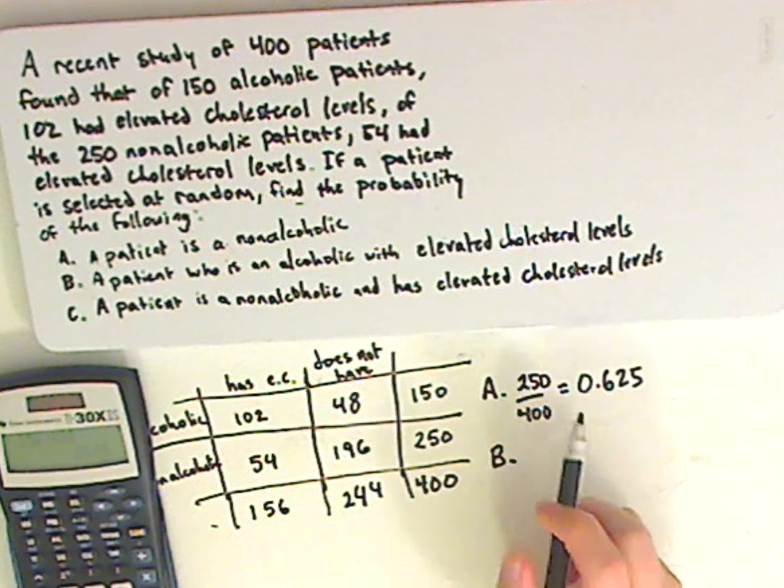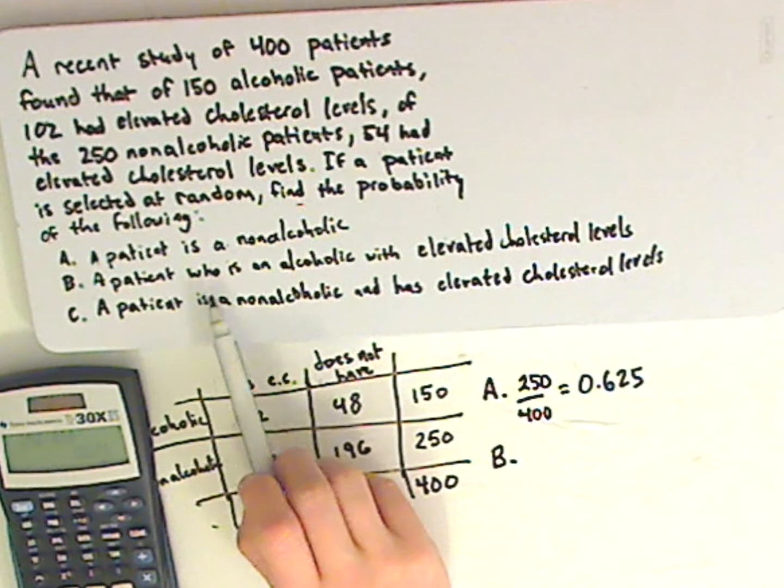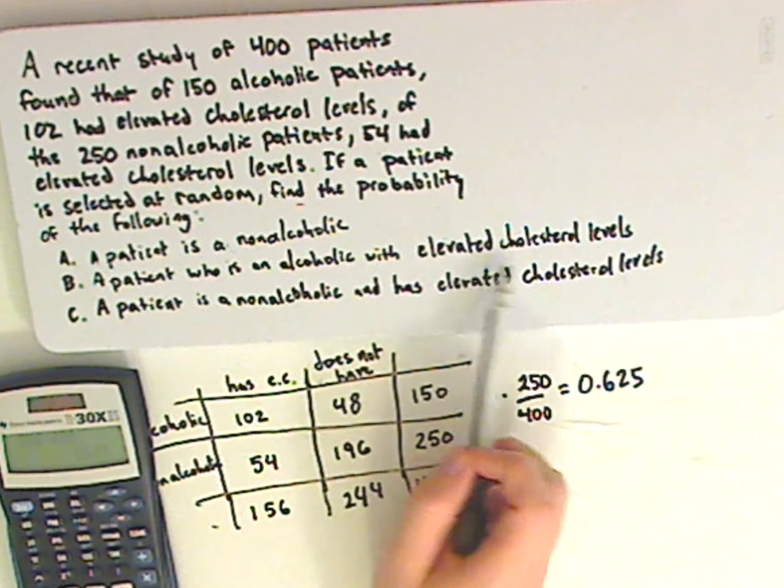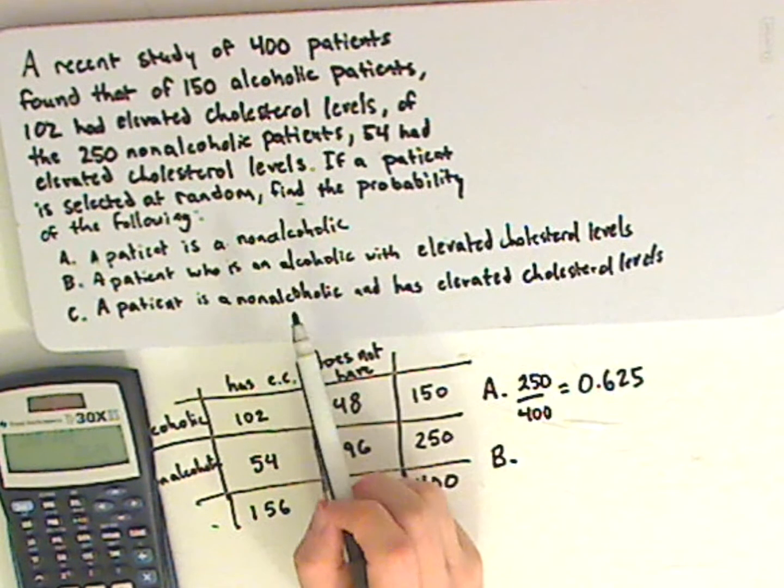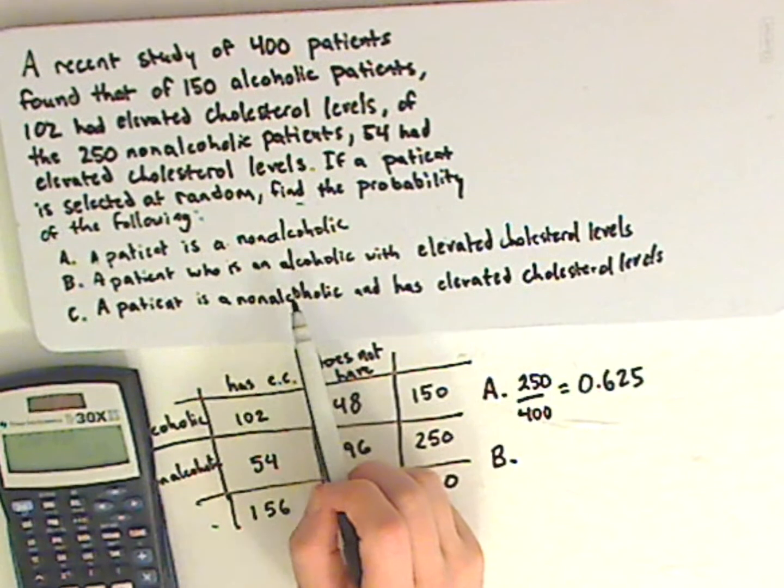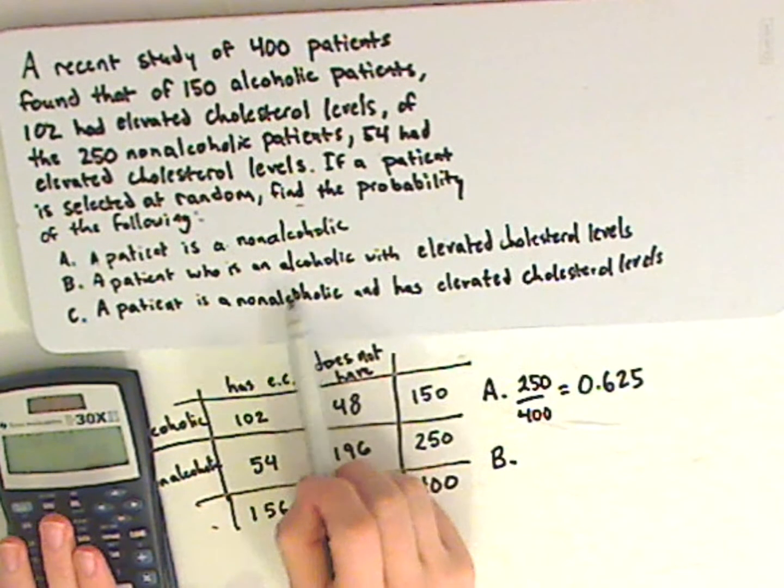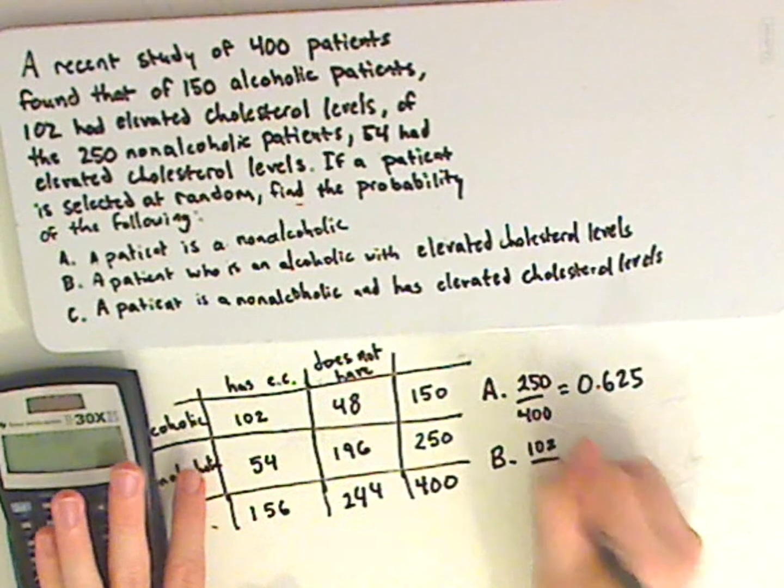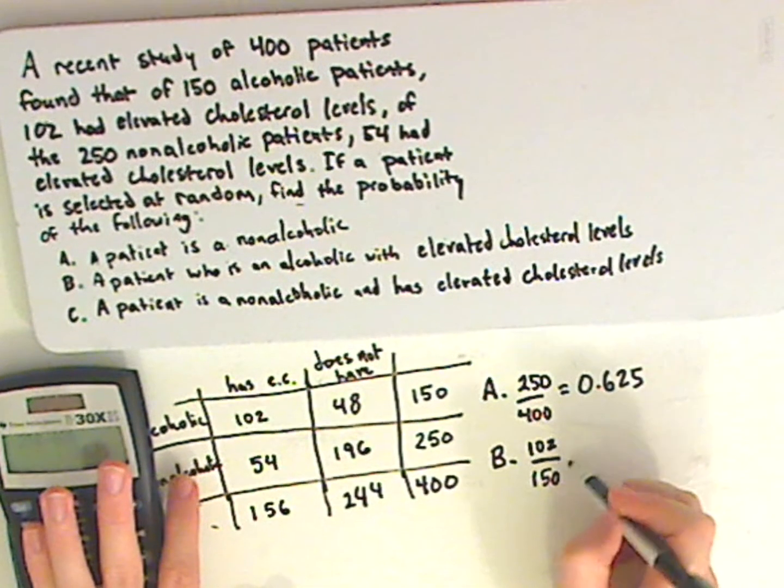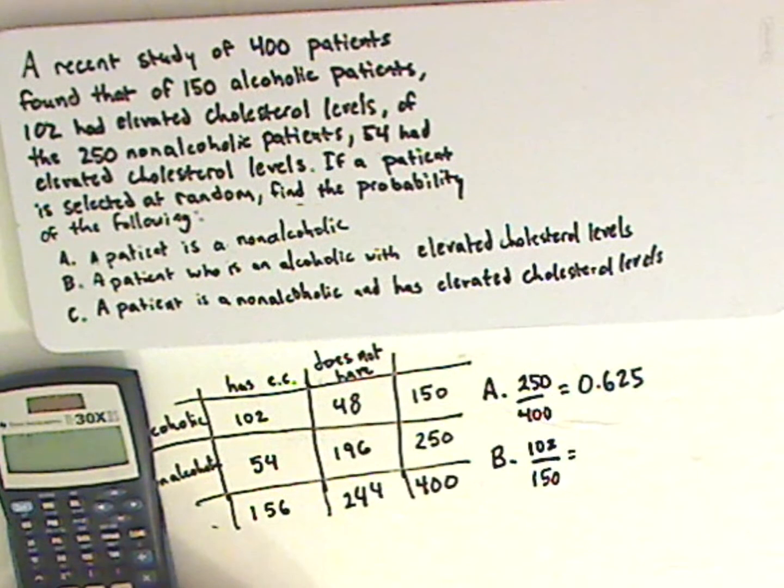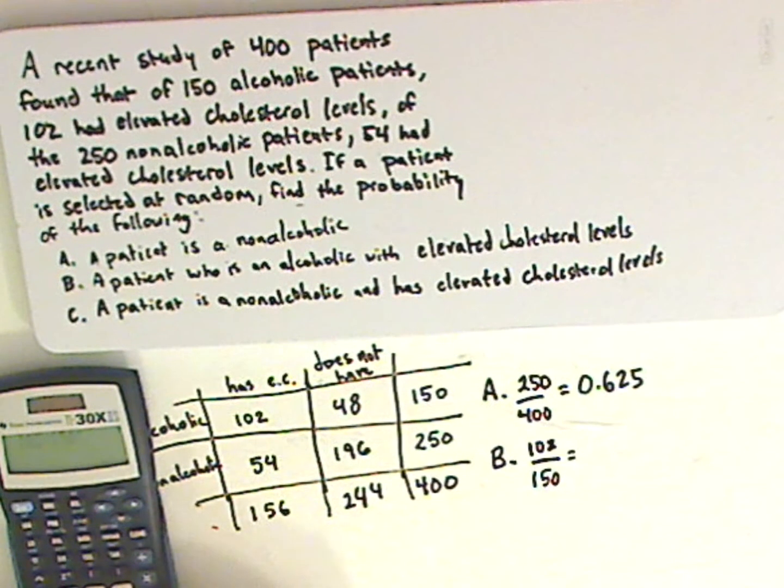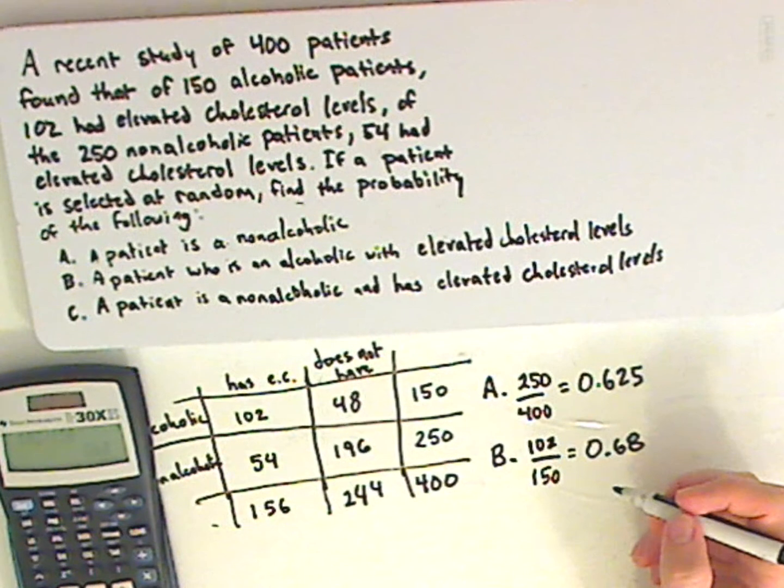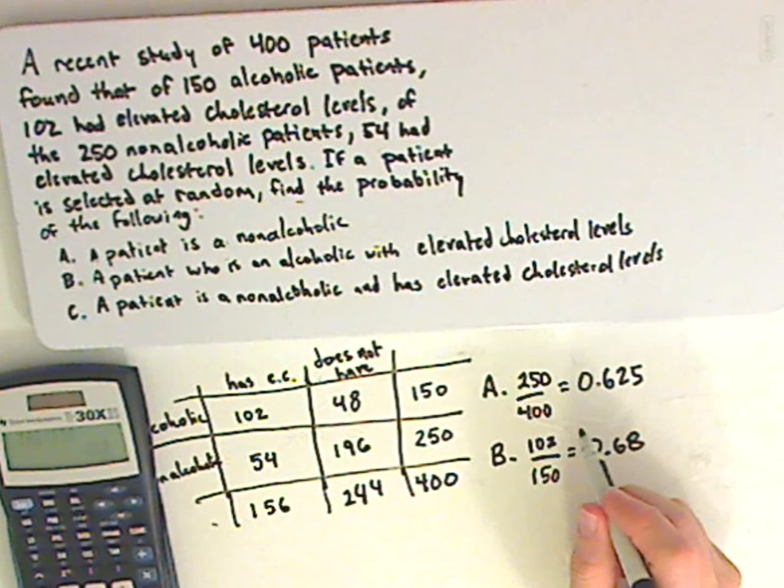Now how do I calculate the next one? Well, the way it's worded, it's kind of tricky, but it's given that they're an alcoholic, and you're calculating elevated cholesterol levels. So that means all you're looking at is a group of alcoholics who have elevated cholesterol levels. So it would be 102 out of 150. Probability can be written as a decimal or a percentage. More often than not, in this class, you're going to see it as a decimal.